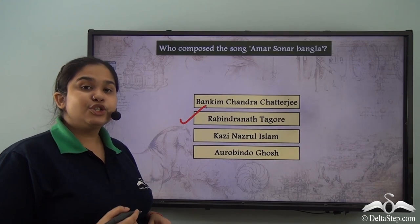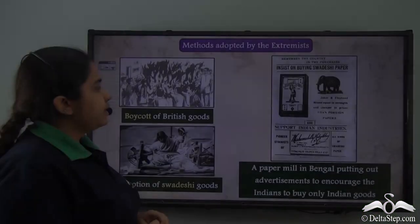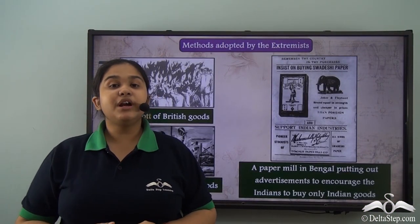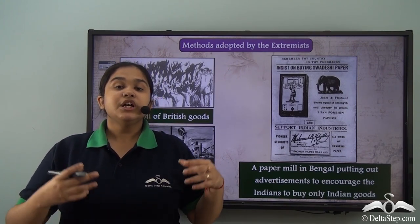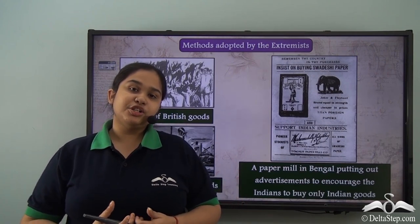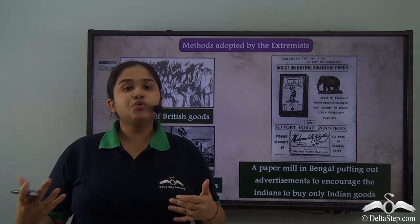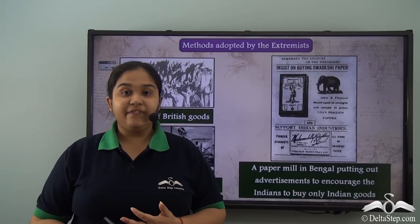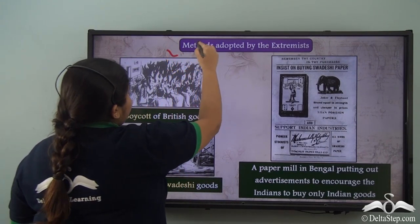Amar Shonar Bangla became one of the most famous songs used in the nationalist struggle and was so powerfully embraced by the people that Bangladesh, after its creation, adopted Amar Shonar Bangla as its national anthem, composed by Rabindranath Tagore.